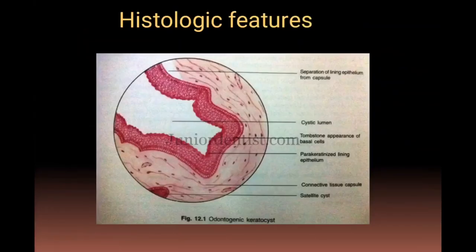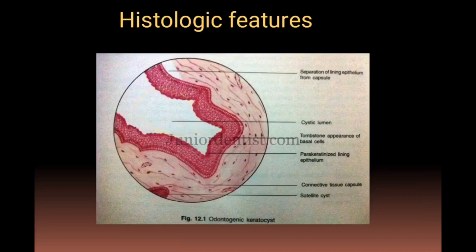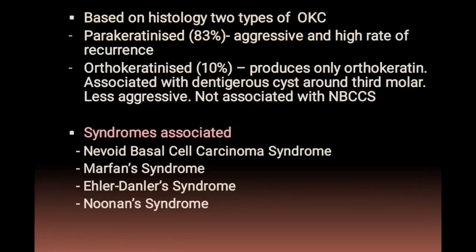In histologic features, a unique feature is the satellite cyst, along with a tombstone appearance of the basal cells, separation of the lining from the capsule, a large lumen, and parakeratinized epithelium. Based on histology, there are two types: the parakeratinized type, which is the major type with aggressive behavior and high recurrence rate, and the orthokeratinized type, which is less aggressive, associated with dentigerous cyst around the third molar, and not associated with nevoid basal cell carcinoma syndrome.